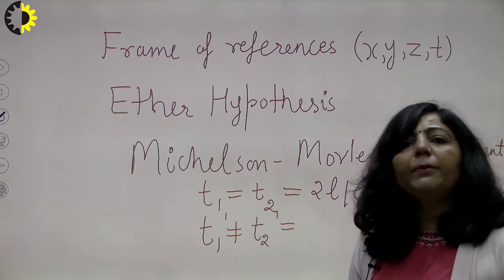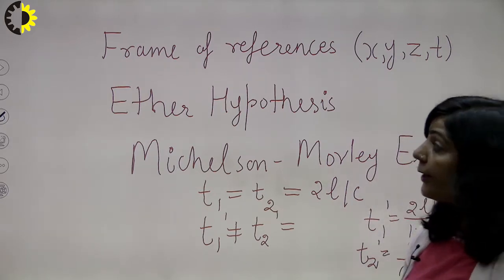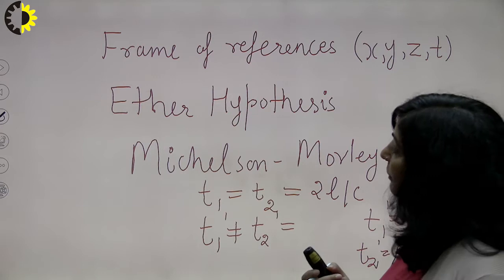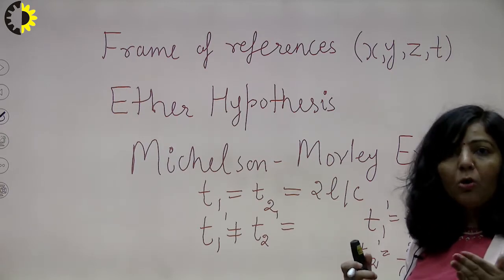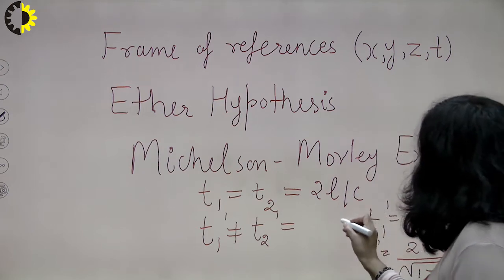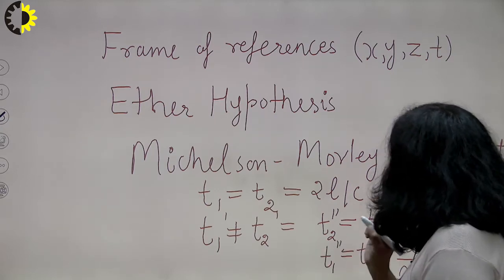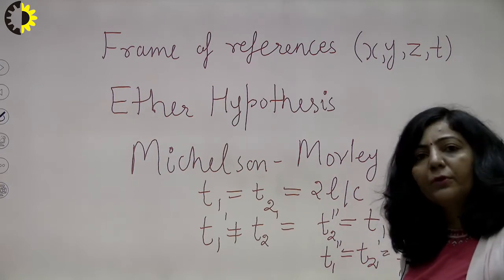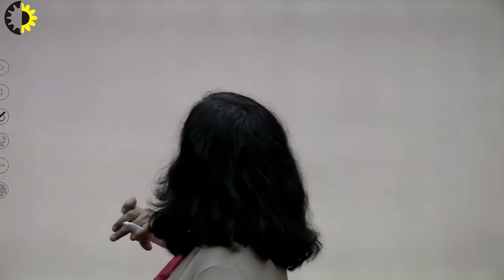Michelson and Morley found that shift in fringes using the theory of interference. In step three, they rotated the apparatus by 90 degrees. Their proposal was that if there is a time difference, there is a path difference — one optical path is longer than the other. Rotating 90 degrees makes the longer path shorter and vice versa, so t1-dash becomes t2-double-dash and t2-dash becomes t1-double-dash. This gives the same time difference and path difference but in the opposite direction.